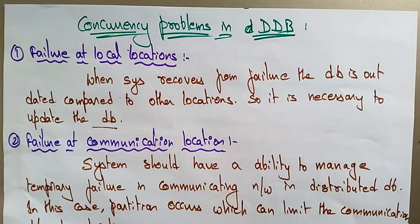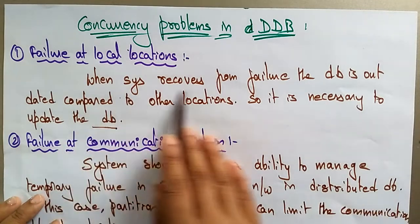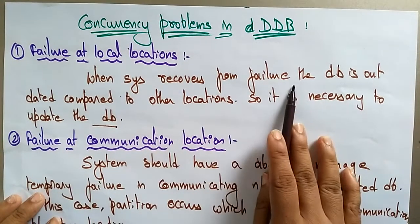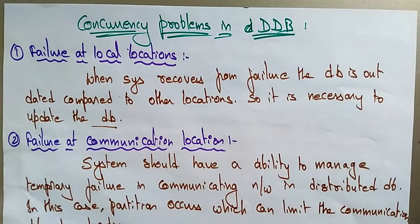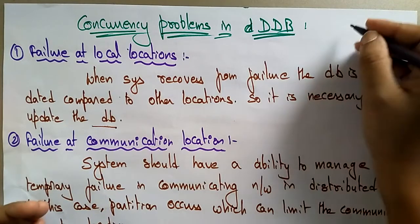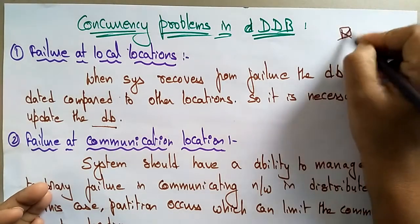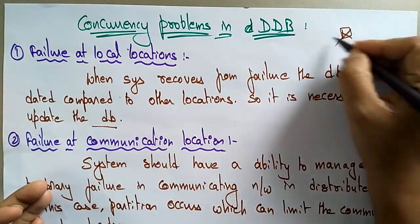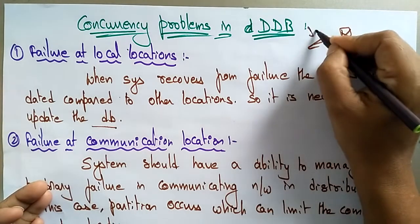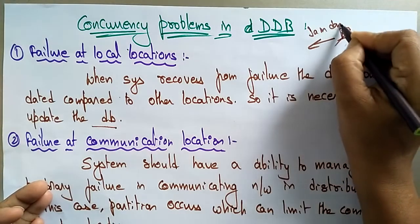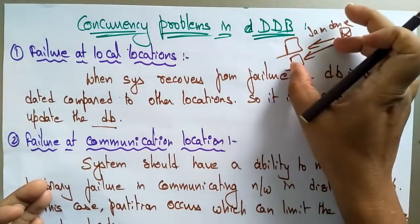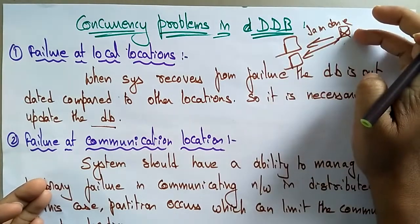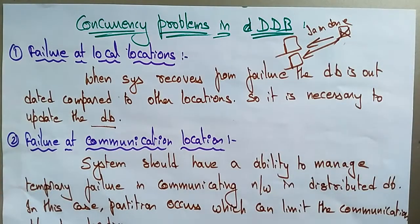Whenever there is downtime and a system recovers from failure, the database is obviously outdated compared to the other locations. When the system recovers, it has to update all the other systems so that those systems can again interact with each other.